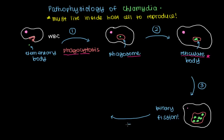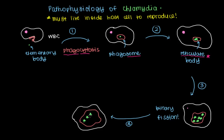Once enough reticulate bodies have been reproduced, chlamydia will decide it's time to infect another cell. An even larger endosome now contains reticulate bodies that have reproduced, but in addition, elementary bodies — the infectious forms of chlamydia — have started being produced. So elementary bodies are the infectious version, while reticulate bodies are the growth version. These start mass-producing within the cell, and the cell is now on the verge of death because its nutrients are not being used to sustain its membrane or general survival.